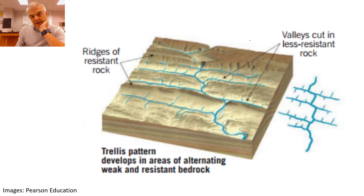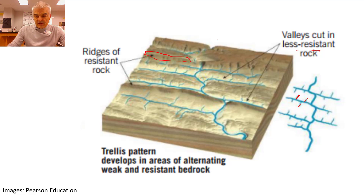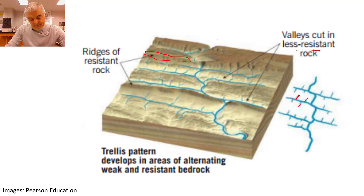Now the trellis is a different one — it's sort of rectangular but also has these little tributary offshoots. What happens is you've got ridges of resistant rock; the ridges are made of something strong, likely an igneous or metamorphic rock, and the valleys are a less resistant rock. The valleys have been cut by the water — the water cuts and sculpts the earth. This is the trellis pattern. Sketch that; it would be helpful.